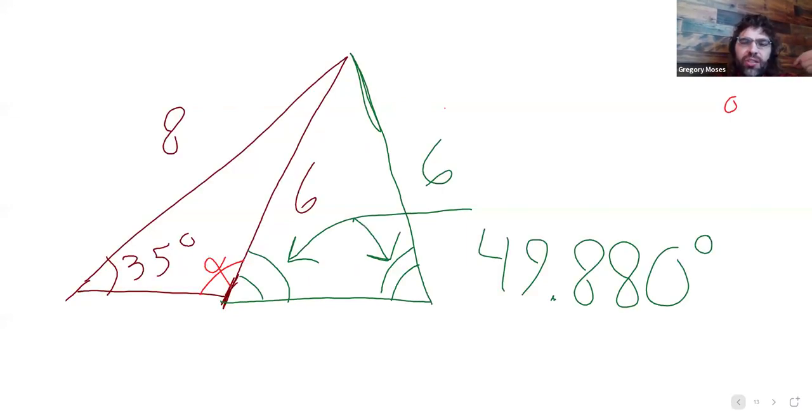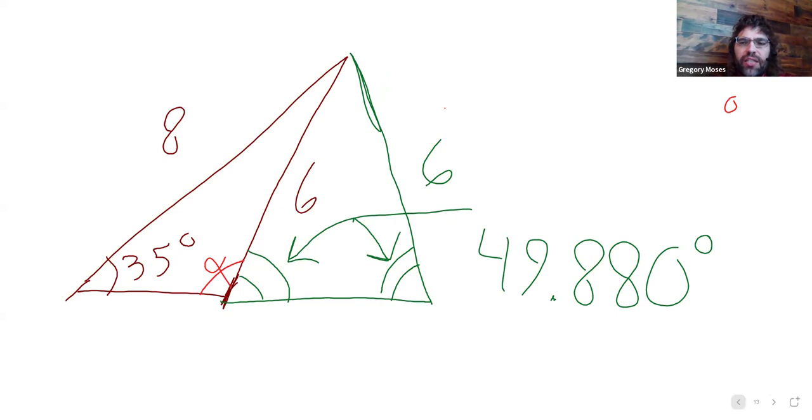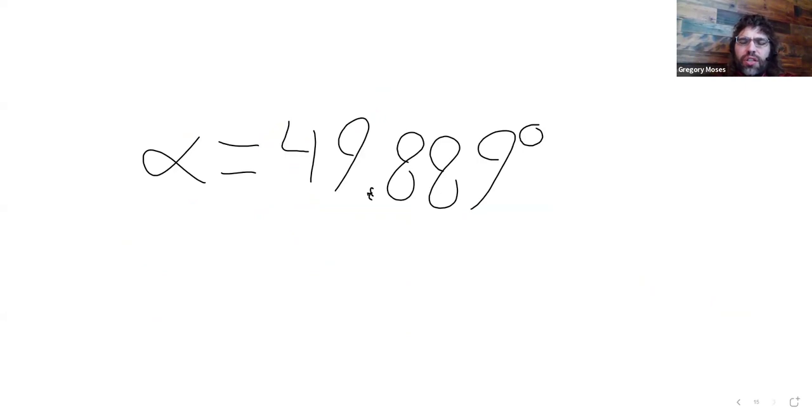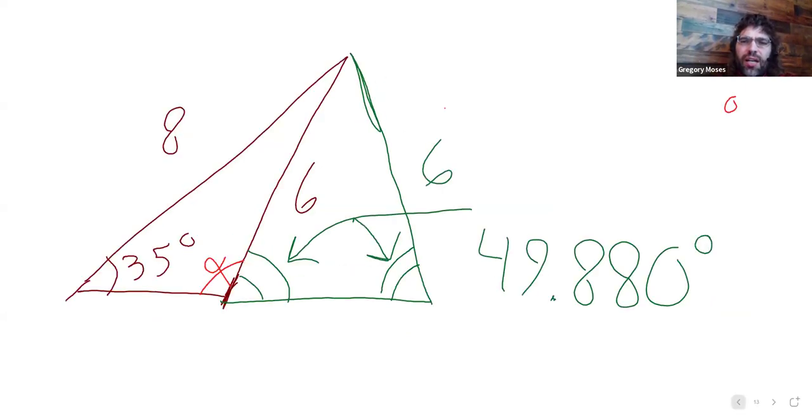Fortunately, once we've recognized that this has happened, finding alpha is straightforward. Here's alpha. Here's 49.889.